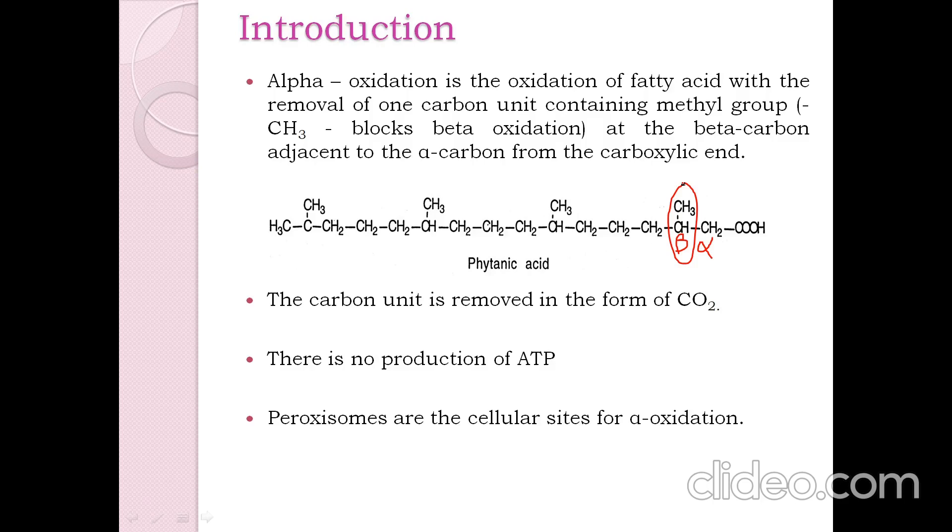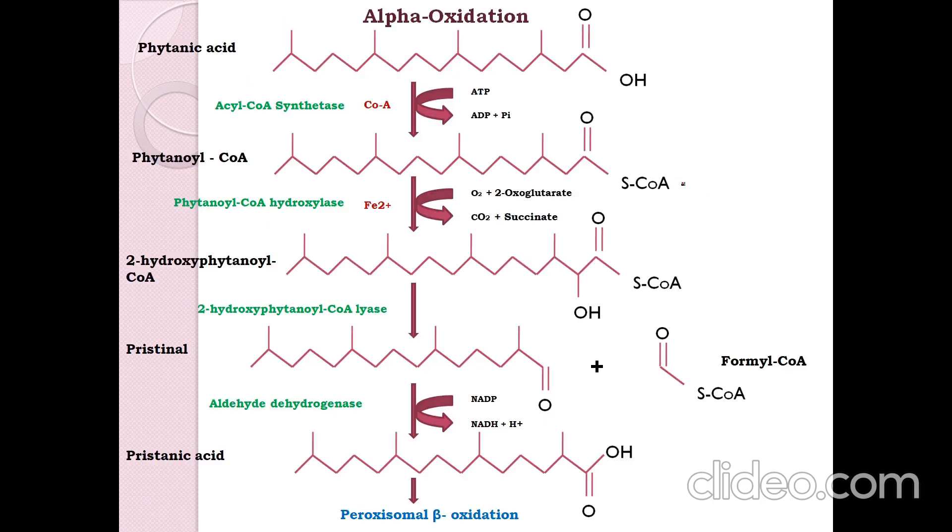There are five different steps in the alpha oxidation process. The first step is activation of phytanic acid to form phytanoyl CoA, second is hydroxylation, third is removal of the formyl CoA, and the fourth is oxidation of pristinal, and fifth is beta oxidation of pristanic acid.